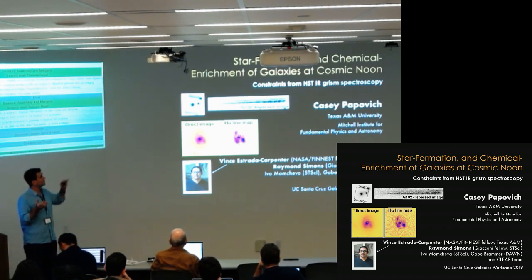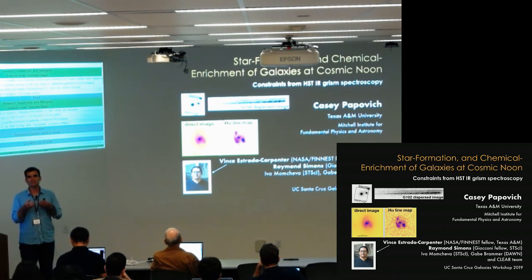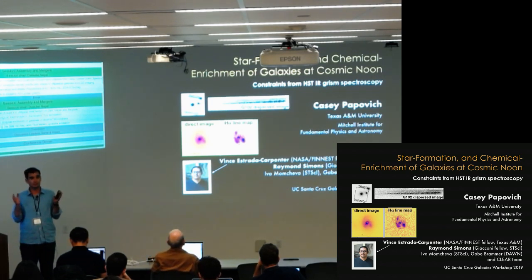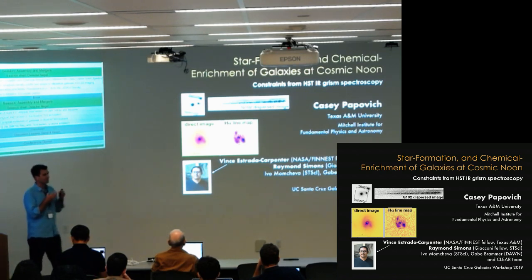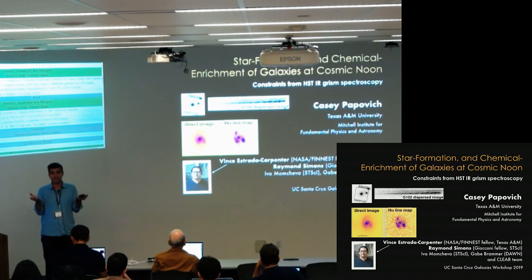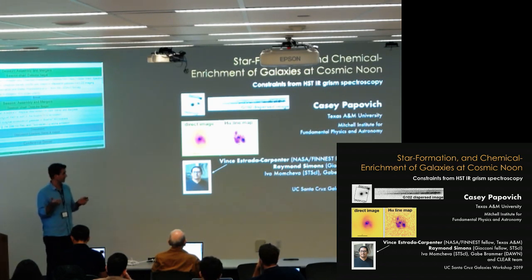I'm going to use a deep set of data from the Hubble Space Telescope, taken with the infrared grism, which provides spectroscopy for galaxies over a large enough wavelength range that it studies a lot of the well-known optical properties that we know and love. Before I do that, I really need to highlight this is very much a team effort — I'm just the one standing up here presenting, and other people deserve a lot more credit.